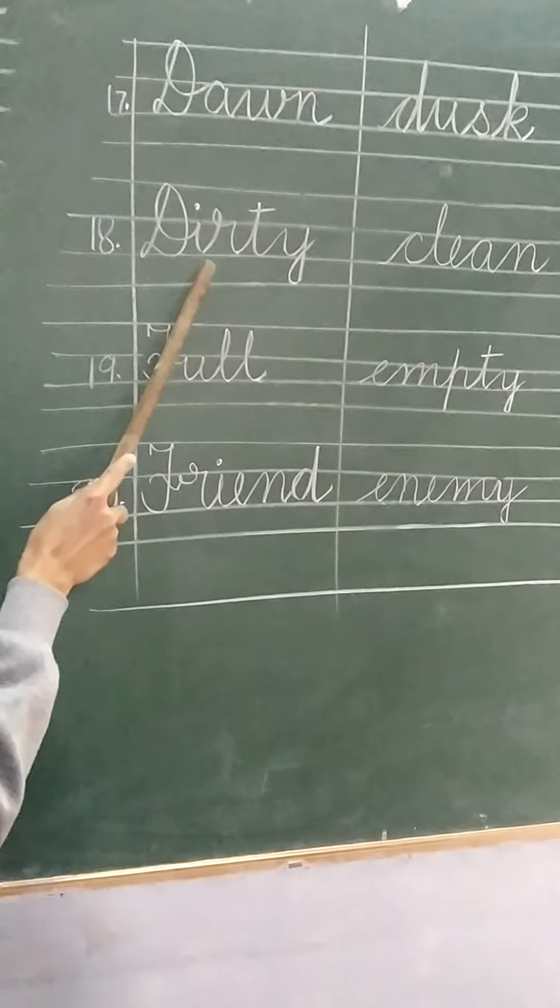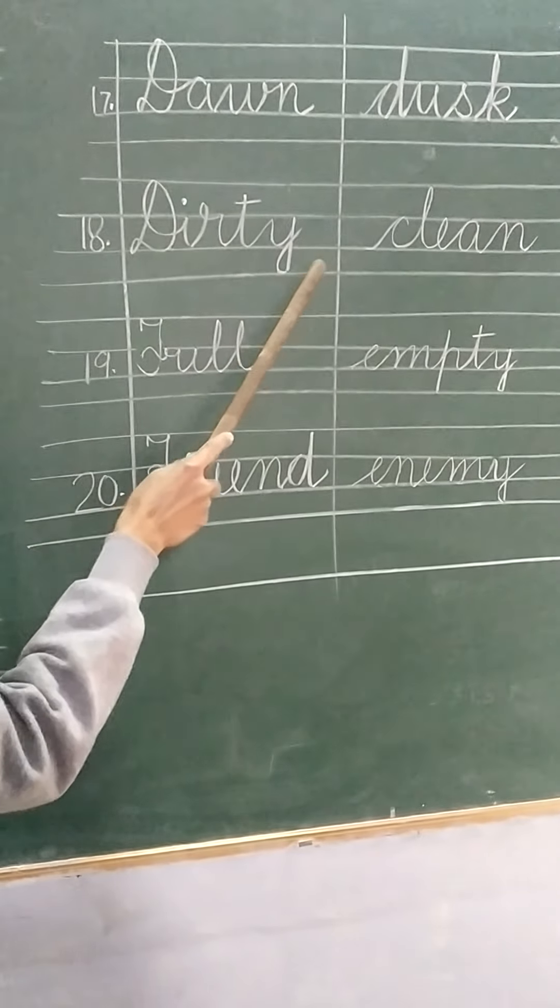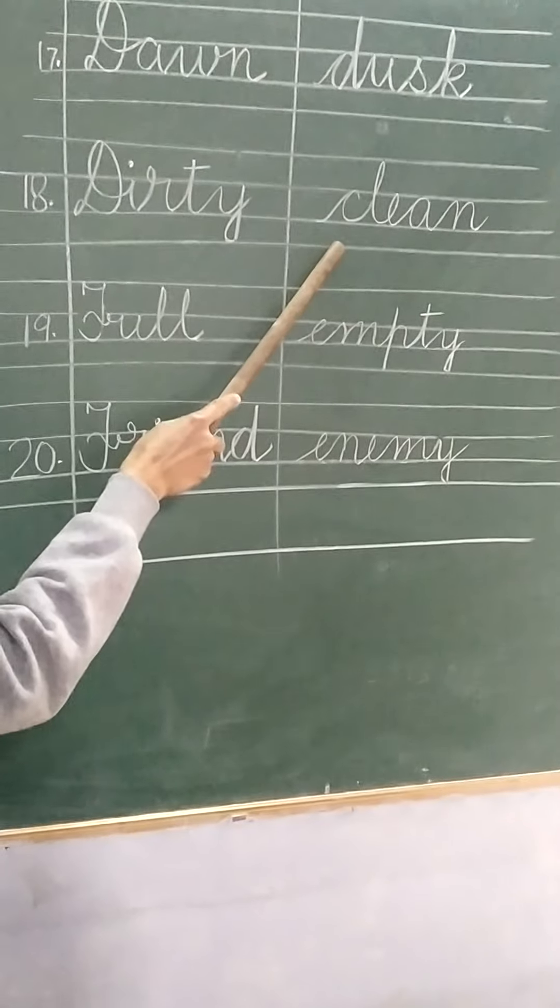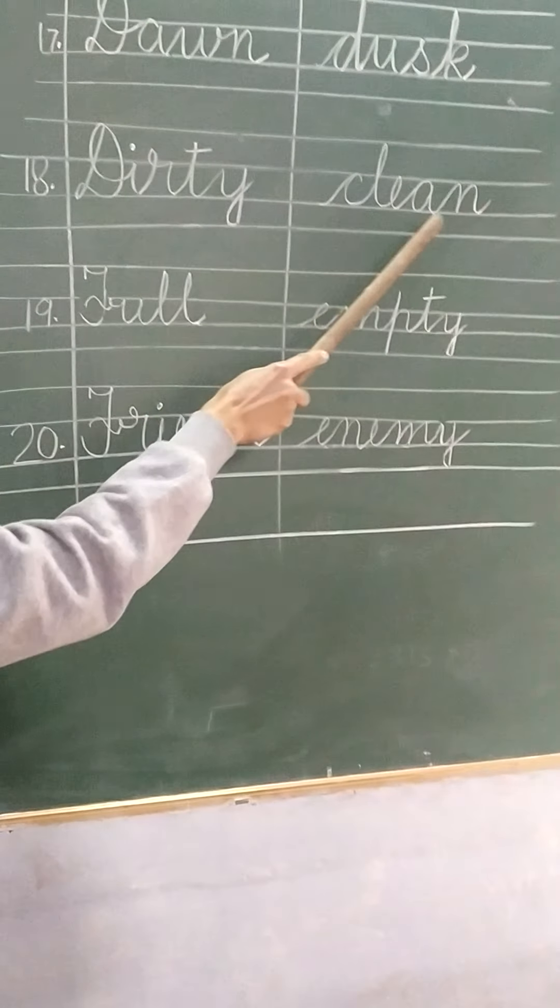Number 18. Dirty. D-I-R-T-Y dirty. Opposite of dirty is clean. C-L-E-A-N clean.